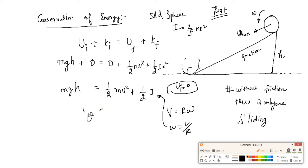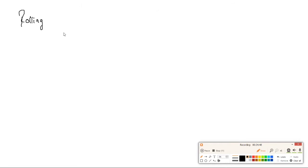Energy conservation is very important for rolling motion. Converting omega in terms of v using v = r·omega, we can simplify to a single variable equation in velocity and solve easily. Next topic: rolling on an inclined plane.